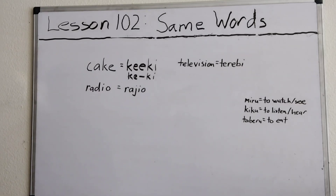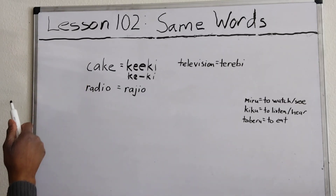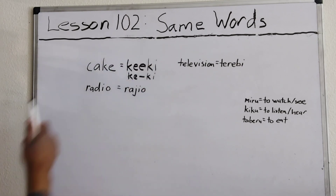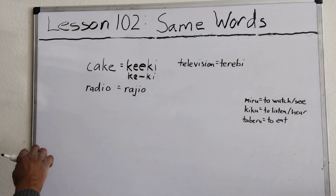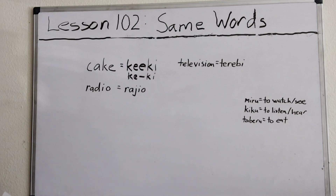In this lesson we're going to go over the fact that Japanese and English share the same words. Many times, languages don't bother to take a foreign word and translate it into their own language — they instead just use the foreign word because it is what it is. This is especially true between English and Japanese.